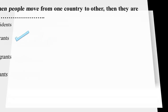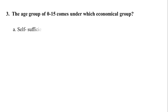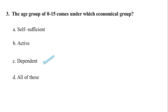Question number three: the age group of 0 to 15 years comes under which economic group? Option A: self-sufficient. Option B: active. Option C: dependent. Option D: all of these. The correct answer is C: dependent.